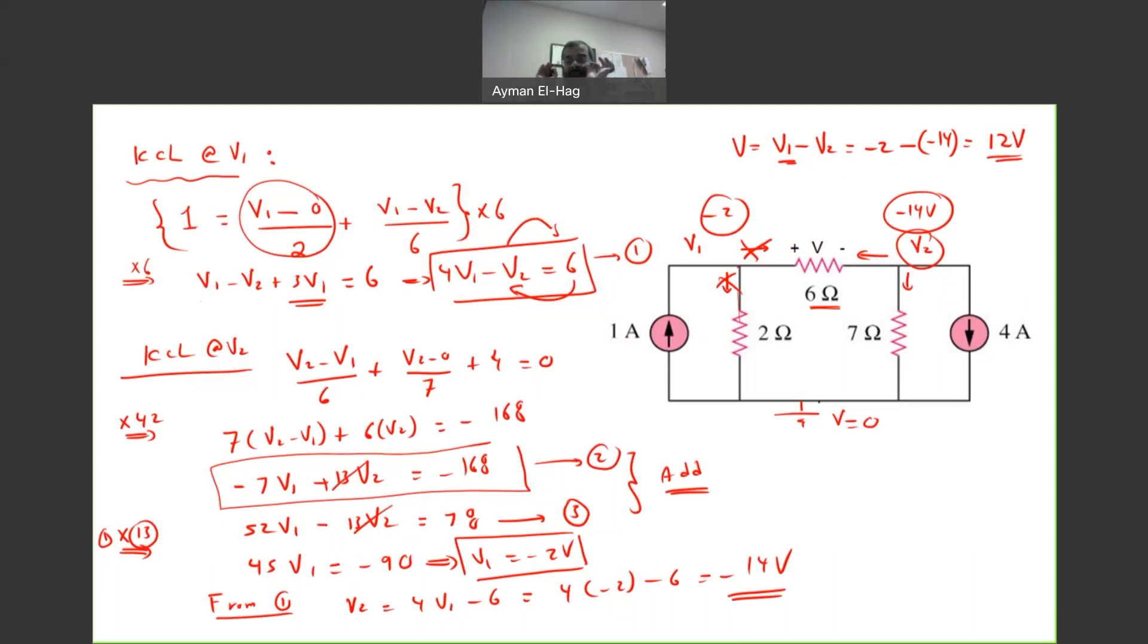And that's exactly the answer we got from the KCL KVL. Remember, in the KCL KVL question, we needed three equations, because we had three unknowns. Here, we have only two equations, because we only have two unknowns. And this is the main advantages of nodal analysis.